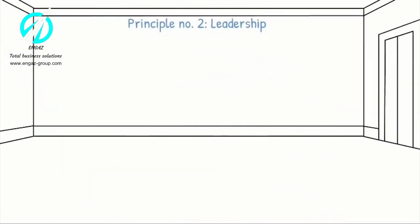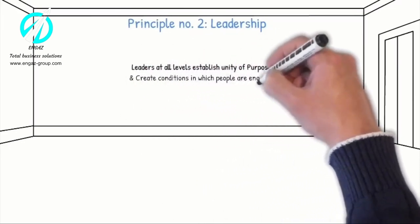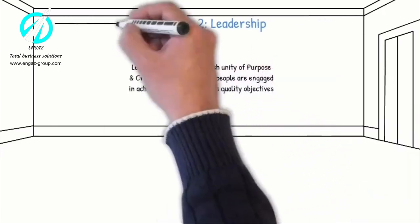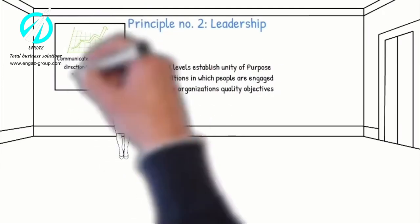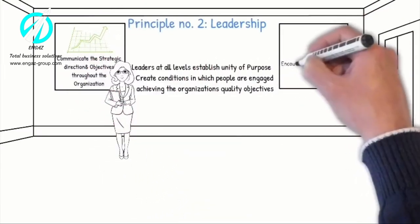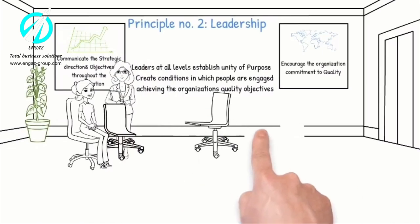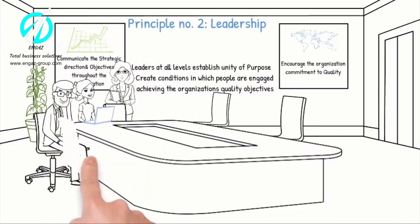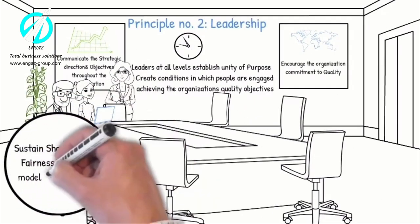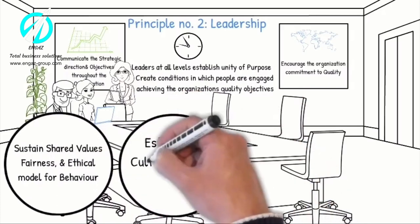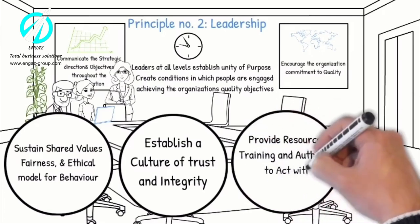Principle number two: Leadership. Leaders at all levels establish unity of purpose and create conditions in which people are engaged in achieving the organization's quality objectives. Leaders communicate the strategic direction and objectives throughout the organization and encourage commitment to quality. Leaders also create an inspiring vision for the future and are personally and actively supporting their teams. They also ensure sustained shared values, fairness and ethical models for behavior, establish a culture of trust and integrity, and provide resources, training and authority to act with accountability.